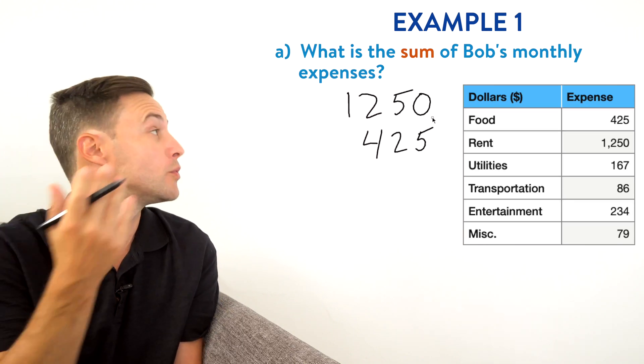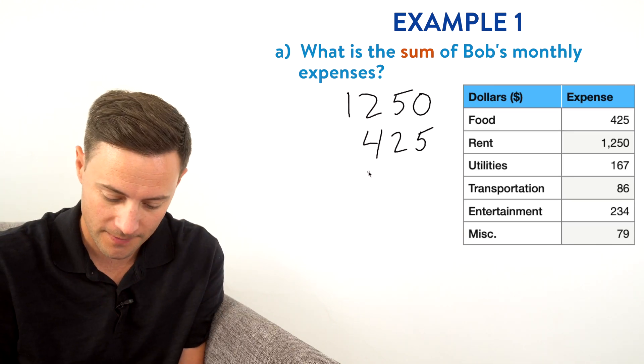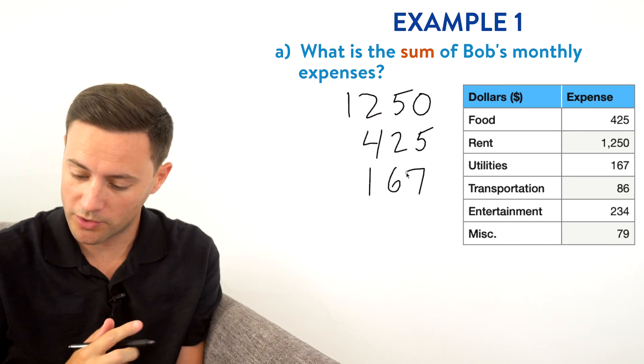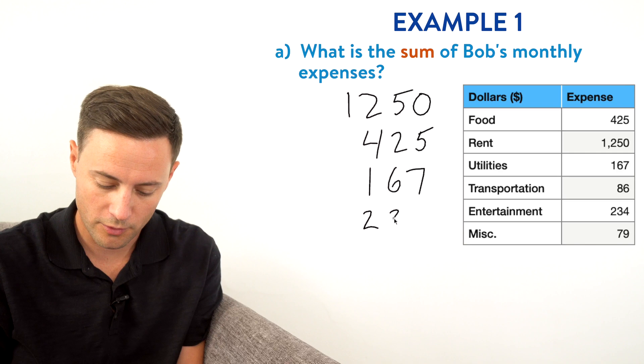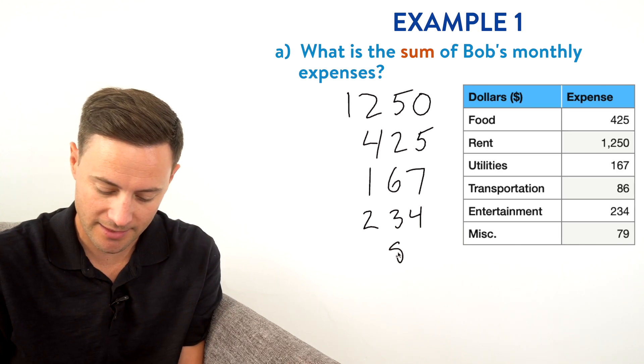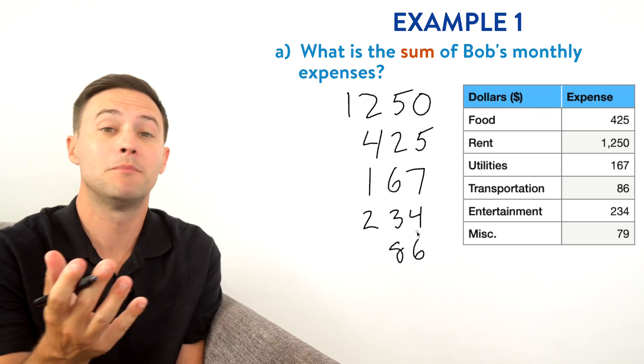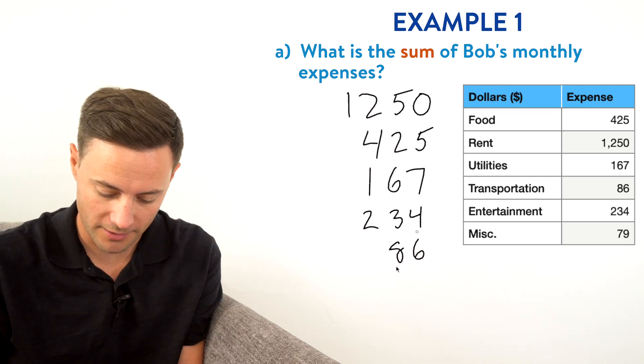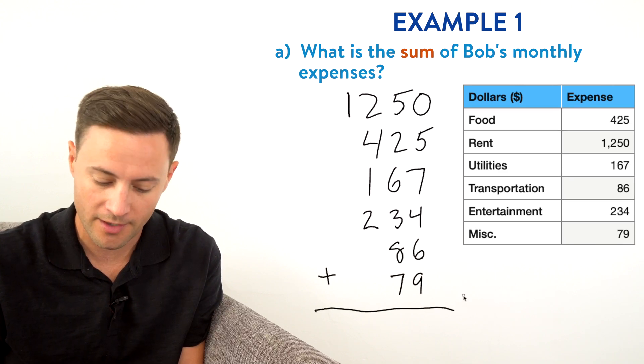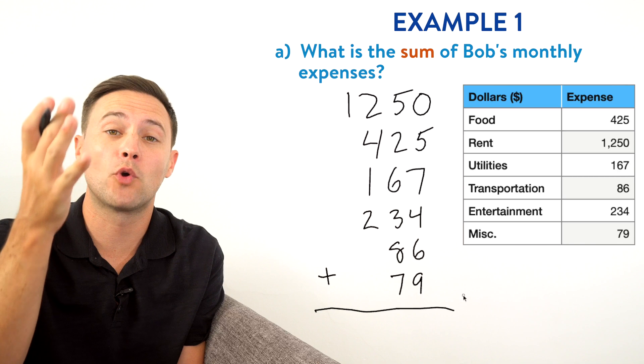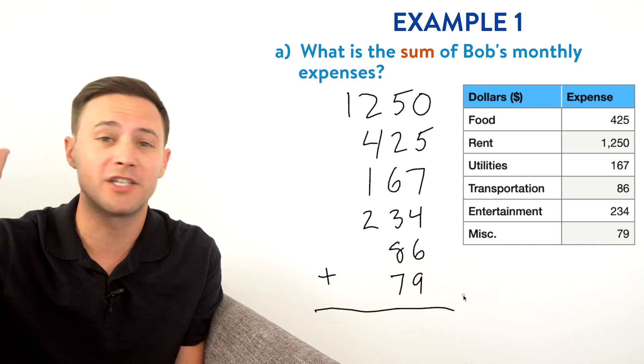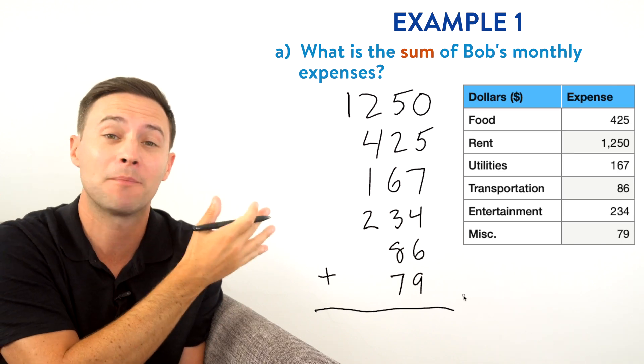And then we combine it all at the end, we're doing the exact same here. The only difference is we're organizing them vertically. So next, let's go with utilities, which is $167. Then I'm going to do entertainment, which was 234. Next, we've got transportation for 86. And finally, miscellaneous was $79. We are adding all of those up together. So that is how I'm going to set up anytime I'm adding two, three, four digit numbers, you want to add it up like that.